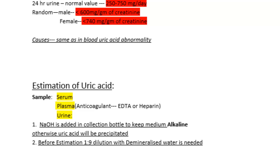For estimation of uric acid, the sample may be serum or plasma. The anticoagulant used for plasma is EDTA or heparin. If urine is used, NaOH should be added to the collection bottle to keep the medium alkaline, otherwise uric acid will be deposited. Before assay, the urine sample should be diluted 1 to 9.